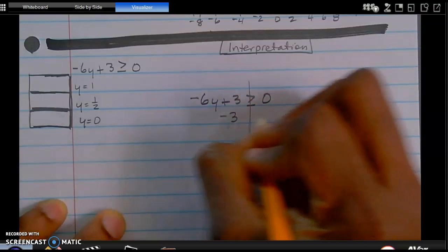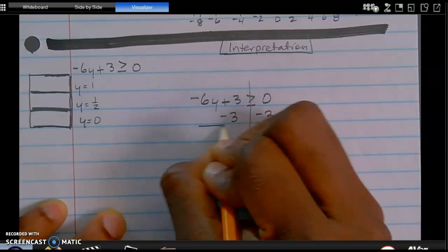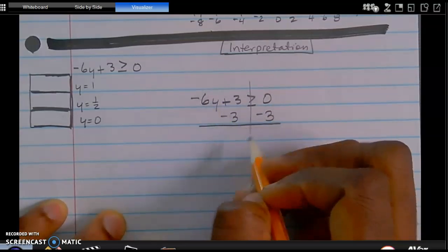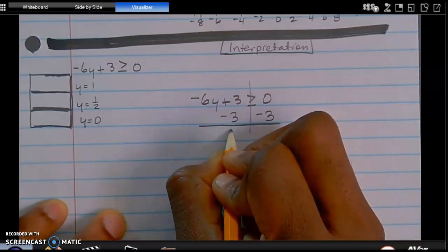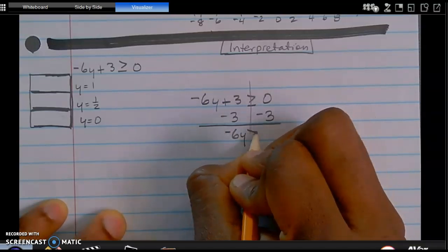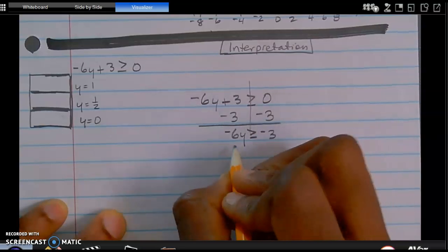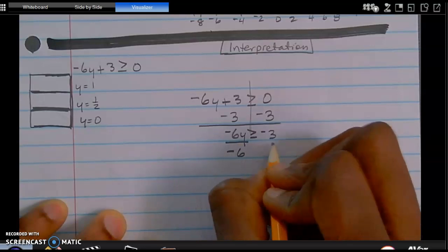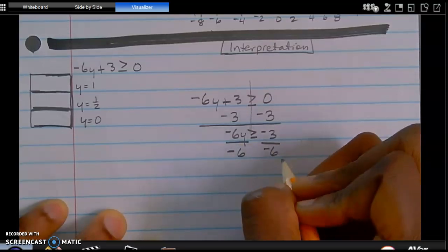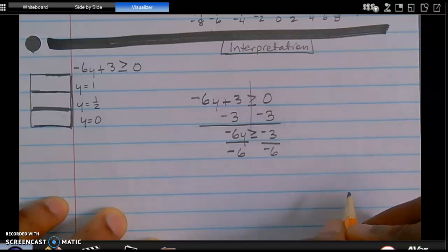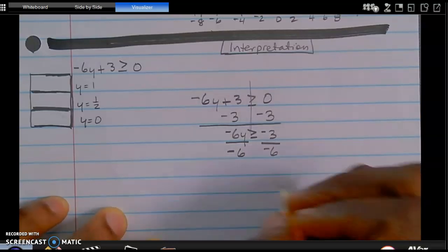So I am going to subtract the negative 3 from both sides because I want this variable and coefficient by itself. So that is negative 6y is greater than or equal to negative 3. What I'm doing at this point is I'm going to divide using the inverse operation. If you are unclear about the steps to solve, please take a look at my solving two-step equations and inequalities video.